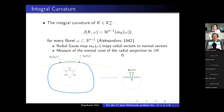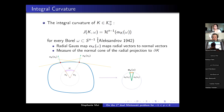Now let me introduce a geometric measure relevant for the rest of this talk: the integral curvature measure. This is defined for convex bodies and Borel subsets of the unit sphere, and was introduced by Aleksandrov in 1972. It's defined as the measure of the radial Gauss image of the input omega for your convex body. In words, this can be thought of as the measure of the normal cone of the radial projection to the boundary of the convex body.